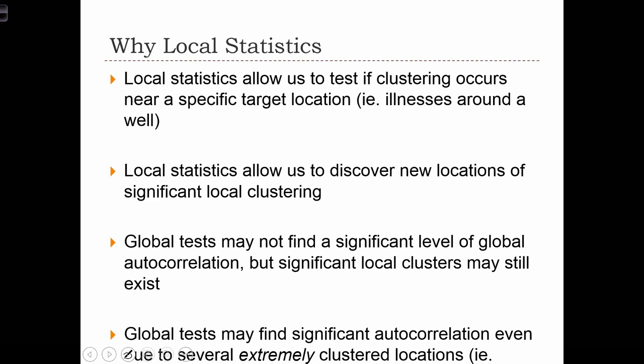For example, where we have some very localized area that has an extreme amount of clustering, the map pattern in general might be one of randomness, but this extremely clustered small area of the map might skew the global test into telling us that, in general, the map pattern is clustered.